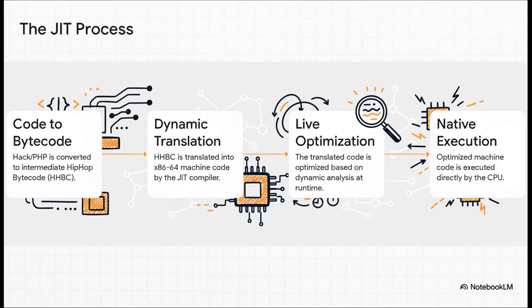It spots the pieces of code that are used over and over again and says, ah, this part is important! It then translates just those specific pieces into raw, super-optimized machine code. That final code gets run directly by the computer's brain, the CPU, which makes it lightning fast. And the coolest part is, this all happens live, on the fly.